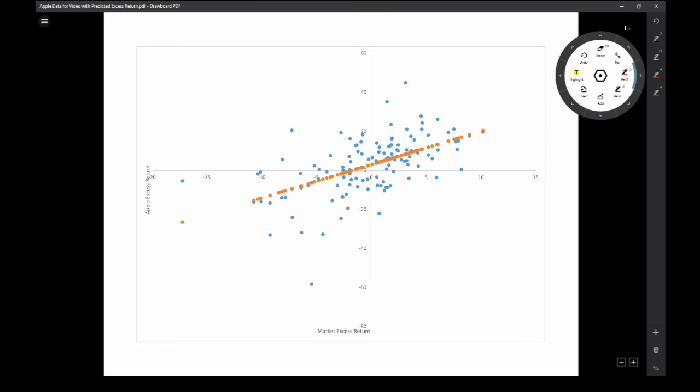So each one of these orange dots here represents the predicted value of Apple's return conditional on a particular market return. So let's just say the market return or market excess return was 5%. We would predict according to CAPM that the return would be somewhere around that red dot. But depending on whether there was a good piece of news or a bad piece of news, the actual return in that given month is going to be different. This distance right here, that's our Epsilon. That's our Epsilon in time T. That is our piece of idiosyncratic news.